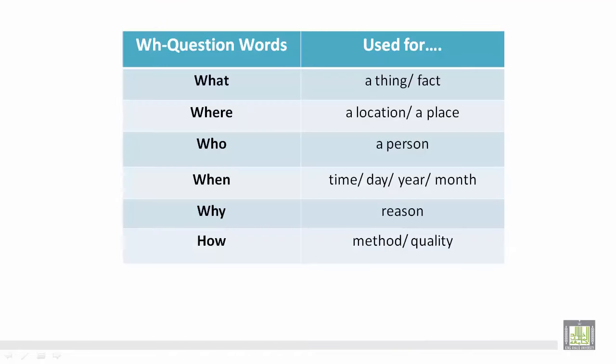WH Question words: what, where, who, when, why, and how. What is used for a thing or fact. Where is used for a location or place. Who is used for a person.